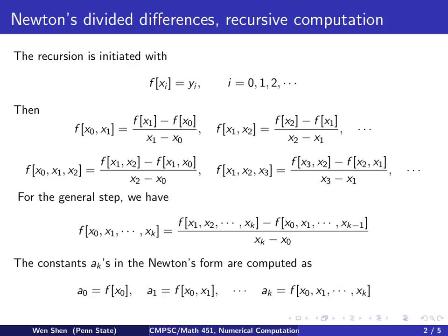Once you have computed all these divided differences, you can use the first values here, and these will exactly be the coefficients in the Newton's form of the interpolation polynomial. So a0 will be f of x0, a1 will be f at x0, x1, and so on. And ak will be f at x0, x1, all the way to xk. Pay attention, these are all of those divided differences starting from x0, the first one.